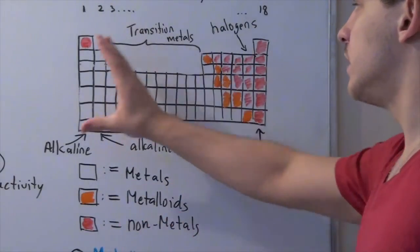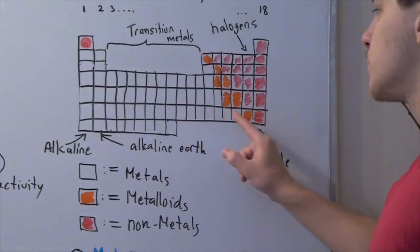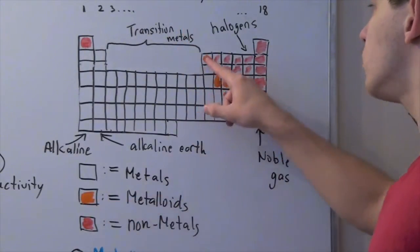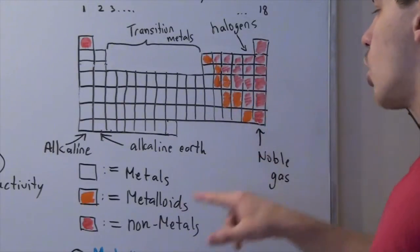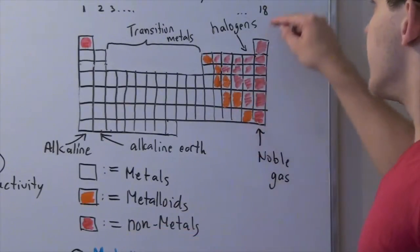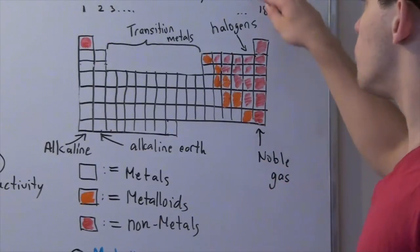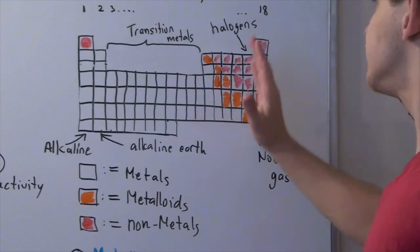And they're found from the left all the way up to this section here. Now, the orange guys are known as metalloids, while the red guys are known as non-metals. Now, group 18 is called the noble gas group, while group 17, the group right next to group 18, are known as halogens.